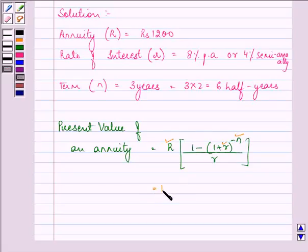So, we have 1200 into 1 minus (1.04), that is equal to 4% itself, raised to the power minus 6 upon 0.04.